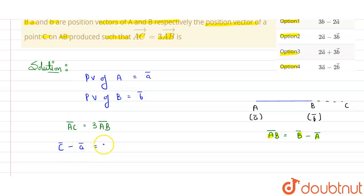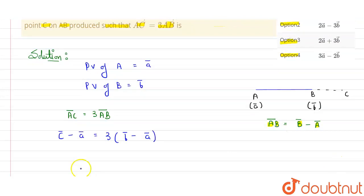So from here we can conclude that C minus A will be equal to thrice of B vector minus thrice of A vector. We need to find the value of C here, so C vector will be equal to 3B vector minus 3A vector plus A vector.